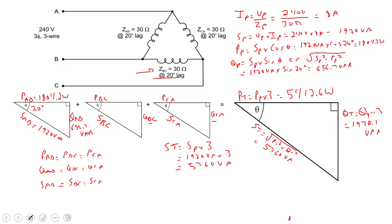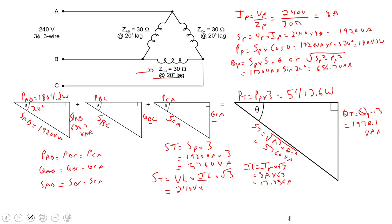Let's try the new three-phase power formula for delta: S total equals V_line times I_line times root 3. We already learned this worked for Y. In delta, I_line equals I_phase times root 3, so 8 amps times root 3 gives 13.856 amps. Then 240 volts times 13.856 amps times root 3 equals 5760 VA — the same answer!